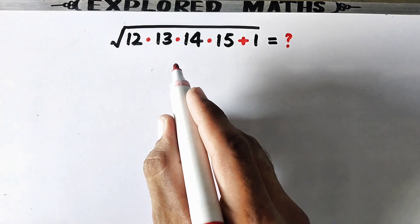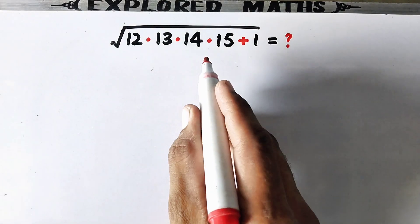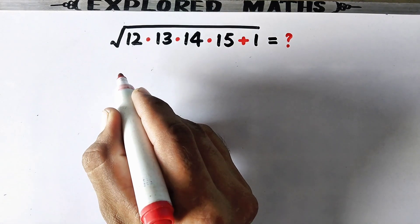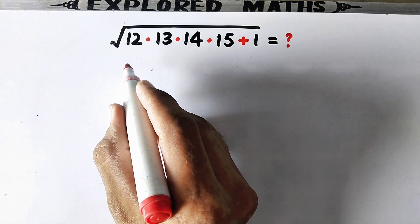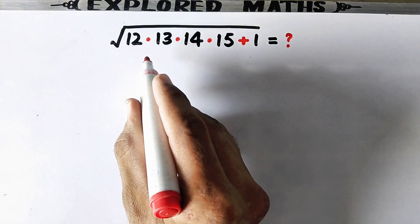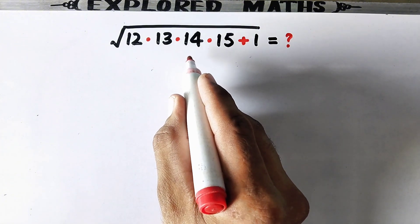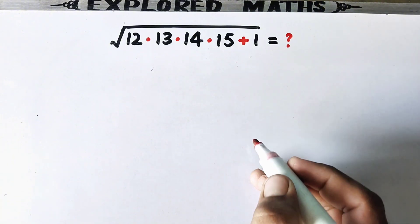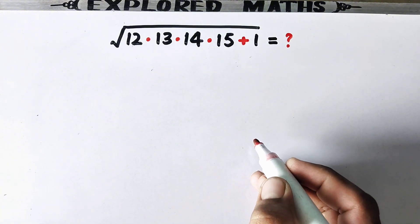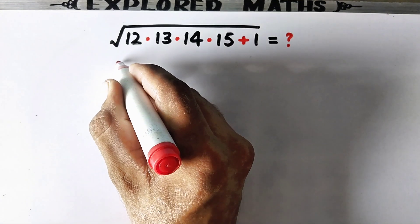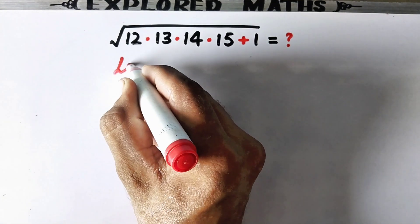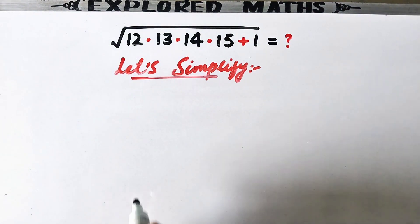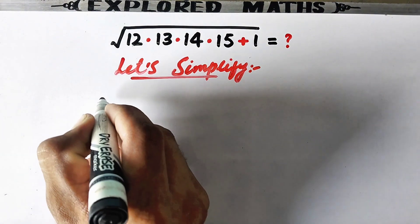Hello and welcome to my channel Explored Maths. In this video we are going to simplify the square root of 12 times 13 times 14 times 15 plus 1, and find what it is equal to. So let's simplify it.